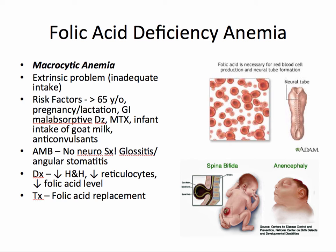Unlike pernicious anemia, folic acid deficiency anemia has no neurological symptoms; however, you will still see glossitis or angular stomatitis. The lab work looks very similar but there's a decreased folic acid level instead of a low B12 level. The treatment is folic acid replacement, and the dose is often 1 mg PO daily.